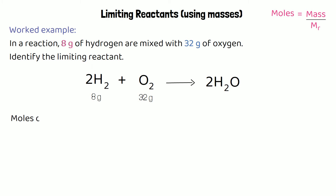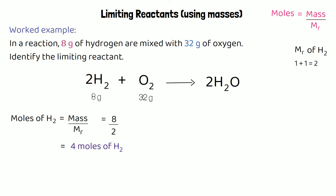To find the moles of hydrogen: moles = mass ÷ Mr. We have eight grams of hydrogen. Hydrogen (H₂) has an atomic mass of 1, and with two atoms the relative formula mass is 2. So: 8 ÷ 2 = 4 moles of hydrogen.